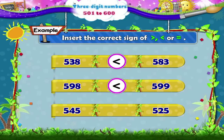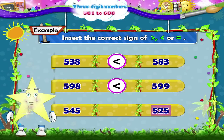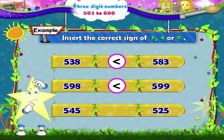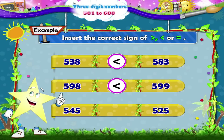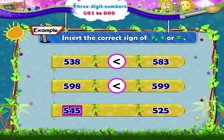Now, the last pair: 545 and 525. Which digits should we compare Starry? On comparing the digits in the tens place, we find that 545 is greater than 525.